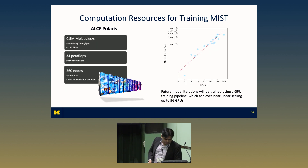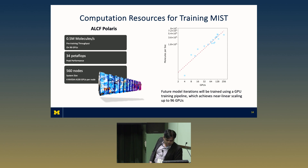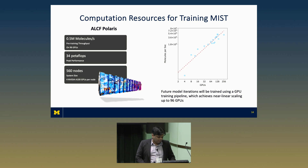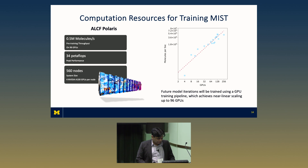On ALCF's Polaris, we see pretty good scaling and can process about half a million molecules per second. That means pre-training on about 50 billion molecules takes about a day. We'll probably scale up the model size and end up using on the order of 500 to 1,000 GPUs to do these pre-training runs.